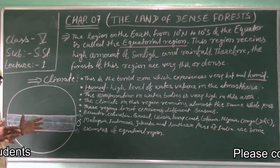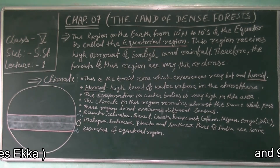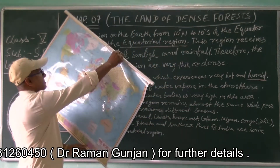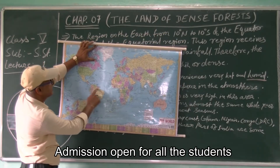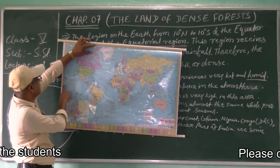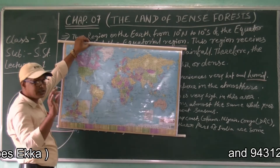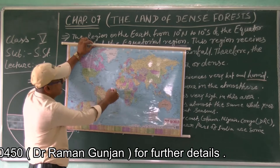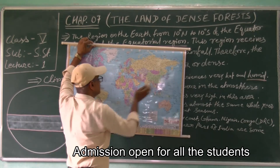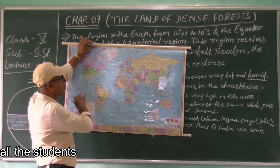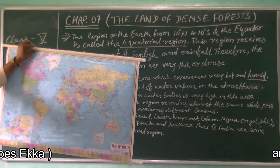There are also seas and oceans. Looking at the map, this is the equatorial region — 10 degree north to 10 degree south. The water bodies here include Pacific Ocean, Atlantic Ocean, Indian Ocean, and the Eastern Pacific Ocean. Apart from seas and oceans, there are many rivers in this region as well.